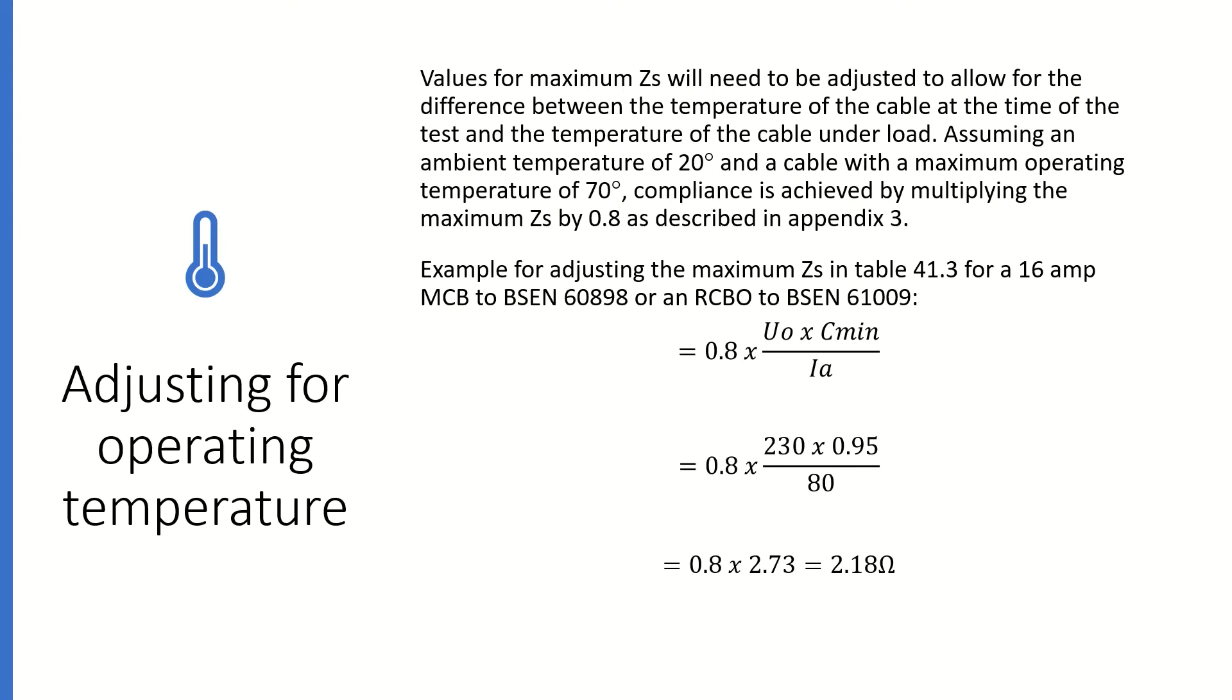So in other words, the values for maximum Zs will need to be adjusted to allow for the difference between the temperature of the cable at the time of the test and the temperature of the cable under load. So assuming an ambient temperature of 20 degrees C and a cable with a maximum operating temperature of 70 degrees C, compliance is achieved by multiplying the maximum Zs in table 41 by 0.8, as described in Appendix 3 of BS7671.